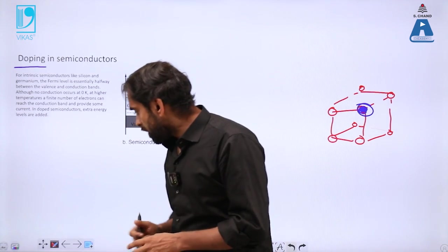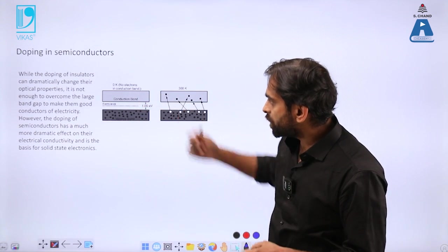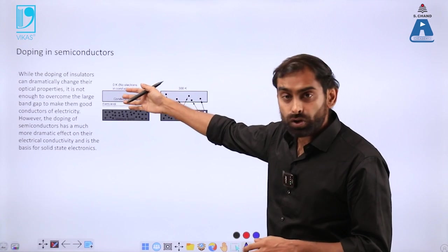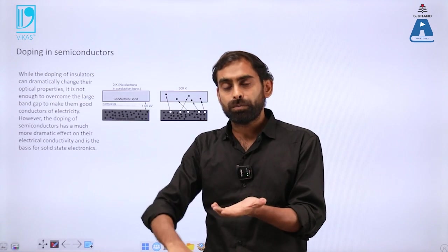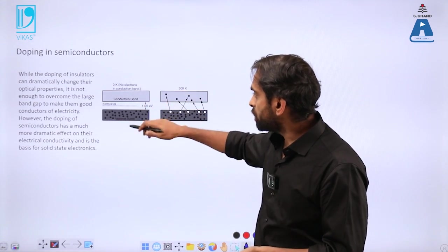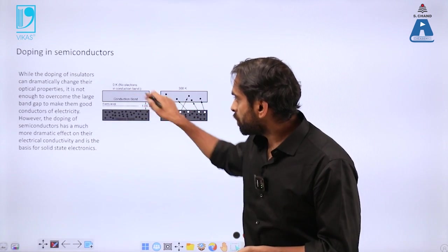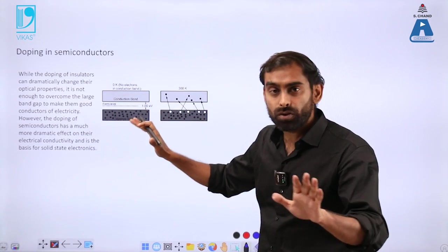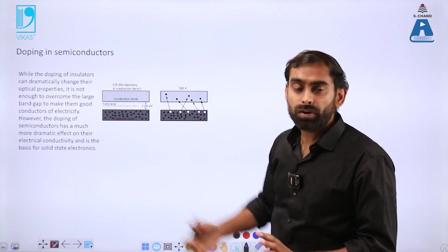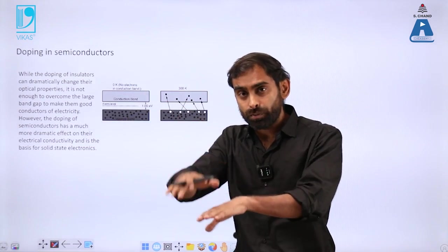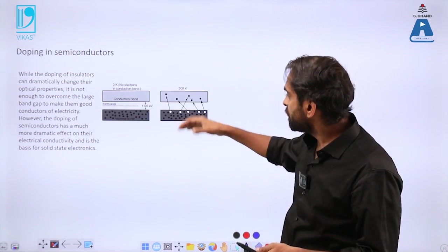You can also check how doping changes these properties. If you don't do doping, at zero Kelvin it will not be possible to transfer electrons from valence band to conduction band. Zero Kelvin is absolute zero temperature where there is no molecular motion and everything is frozen—no vibrations. That's where you can practically realize the distinction between these two bands. At realistic temperatures like 300 Kelvin, you'll see electrons moving from valence band to conduction band.